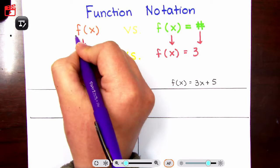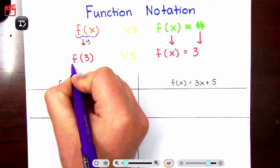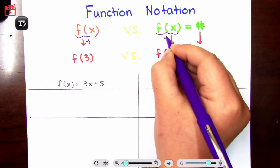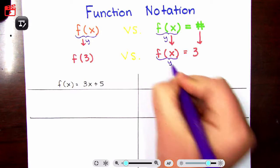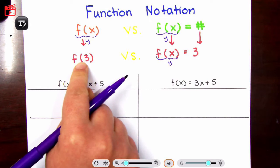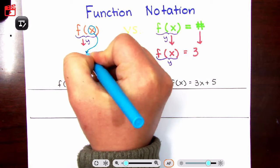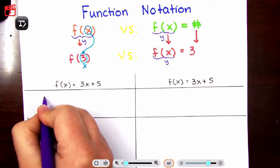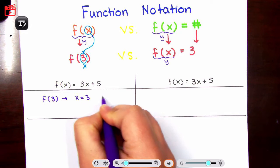When you see f of x, this is another way to write y — so f of x means y. When you see f of 3, I don't see f of x here. What I do see is that the x number is now 3. So this is your x. So if we are solving for f of 3, that means x equals 3, and solve.